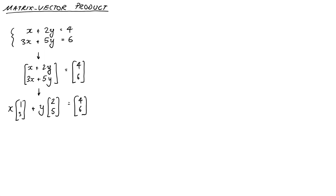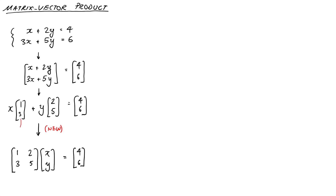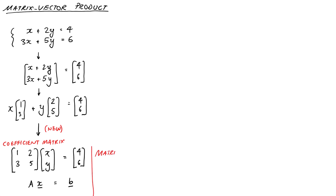If it's not that clear how we got there, just try combining the terms on the left-hand side together again and you'll get it. So what we're going to do now is write the left-hand side in a fundamentally new way. We're going to write it as a matrix (1, 2; 3, 5) — that's just the two columns, the two vectors in that matrix — times the vector (x, y) of unknowns, equals the vector (4, 6). Or, for short, we can write A times x equals B. So this is called a matrix-vector product. The matrix A is called the coefficient matrix here, and we interpret this product as a combination of the columns of the matrix.